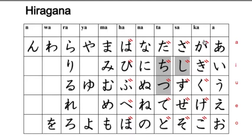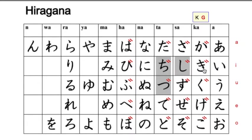When you add the ten-ten accents, the K sound becomes a hard G sound — not a 'j' but a 'gu'. So ka, ki, ku, ke, ko becomes ga, gi, gu, ge, and go. Ko becomes go, ku becomes gu, ki becomes gi — they all work that way.